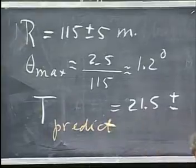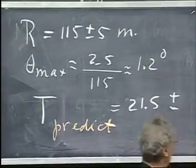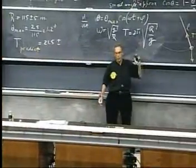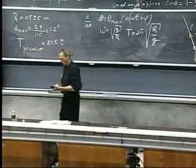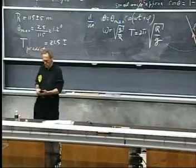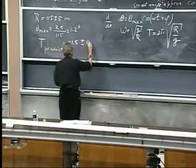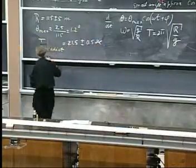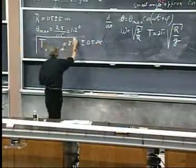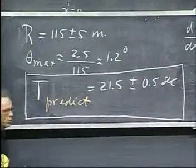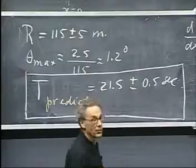The uncertainty in r is about 4.3 percent. Since we have the square root of r, that becomes 2.2 percent. So if I multiply that by .022, I get an uncertainty of about 0.5 seconds. So this is a hard prediction what the period of an oscillation should be, 21 and a half plus or minus a half second.